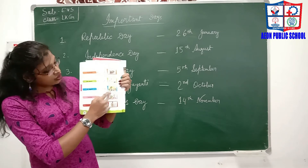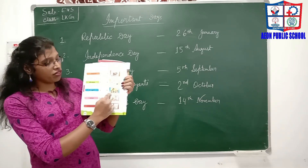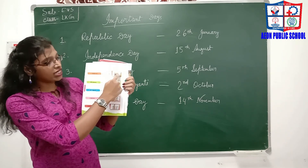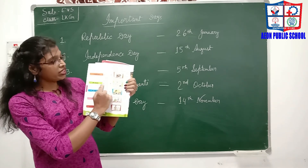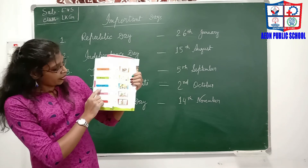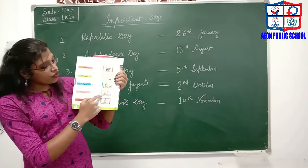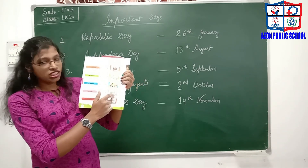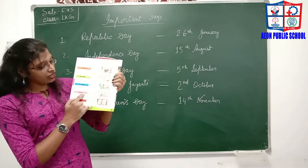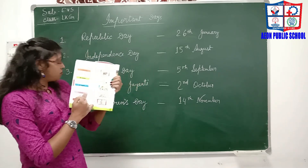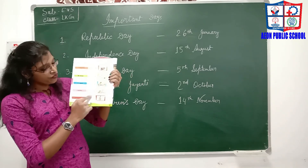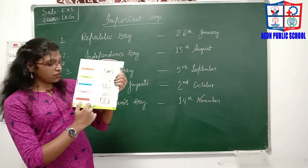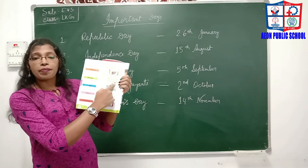5th September — look, this is Teacher's Day; a teacher is talking with students. 26th January — this is Republic Day; the flag is hoisted and people are watching from a distance. Match 26th January with this picture. 15th August — Independence Day; everyone is celebrating by hoisting flags. Match 15th August with this picture. 2nd October is the birth anniversary of Mahatma Gandhi, Gandhi Jayanti; here is a statue of Mahatma Gandhi — match it. And the last one, 14th November, is Children's Day; the children are very happy and celebrating this day.